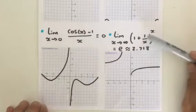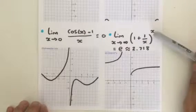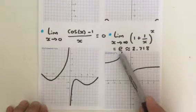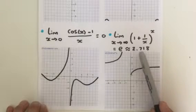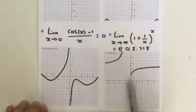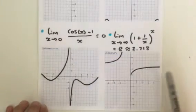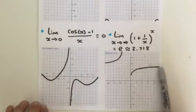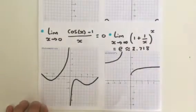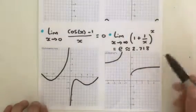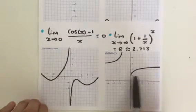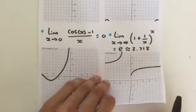Now let's look at the function (1 + 1/x) all to the power x. The limit as x approaches infinity of this function equals e, the exponential constant, which is approximately 2.718. We can see on the graph that as x approaches infinity going to the right, the limit gets closer and closer to 2.718. That's my favourite one — the exponential constant arising as a limit is pretty cool.